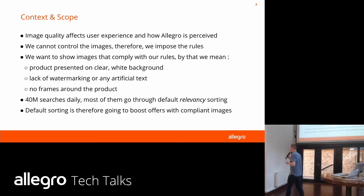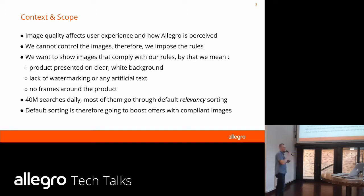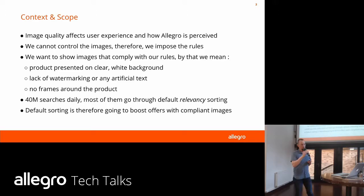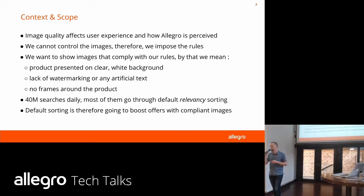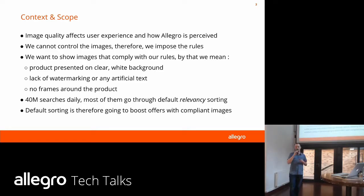Being a platform, we don't upload and create the images ourselves — we rely on our sellers, and we cannot change them directly. We can impose some rules on them. We would like our images to be clean, meaning the product is presented on a clean white background, there is no additional tags or watermarks, and there are no frames around the product. Having a lot of searches every day going through the default relevancy algorithm, we can use this as an incentive for sellers to produce high-quality content. In this project, we detect those aspects and use relevance sorting as a tool to promote high-quality images.